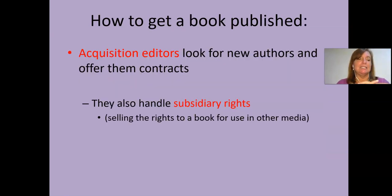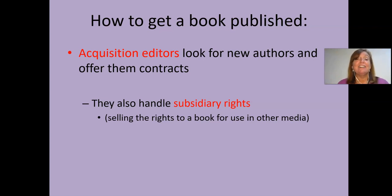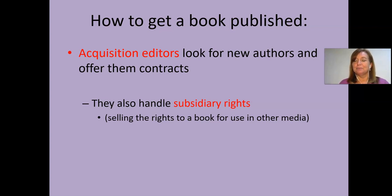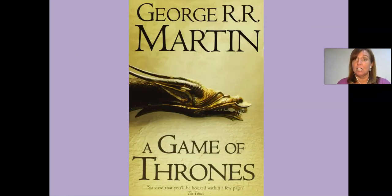So how do you get a book published? You need to know a couple of people. The first is an acquisition editor — they read manuscripts sent by aspiring authors. If you love to read and know what makes a book good, you'd make a fantastic acquisition editor. If you read a manuscript you think is really good, you can offer the author a contract. You also have to worry about subsidiary rights — selling the rights to use the book's material in other media, like movies, board games, video games. Think of everything you can get with Harry Potter, Twilight, or Game of Thrones.